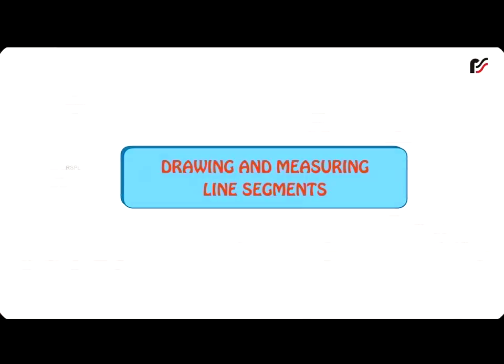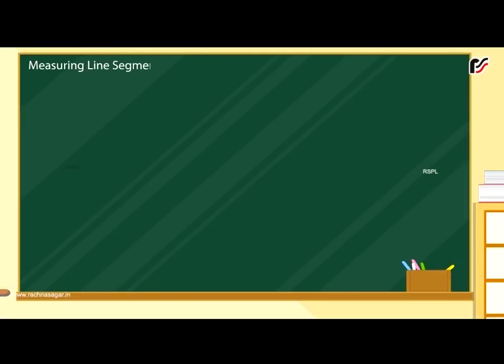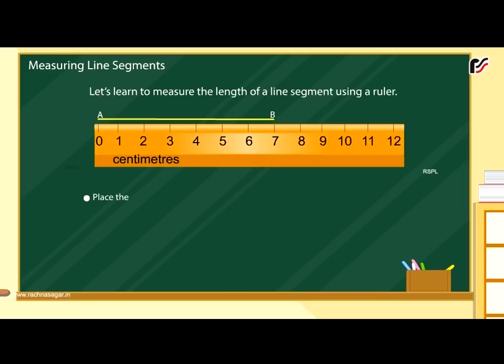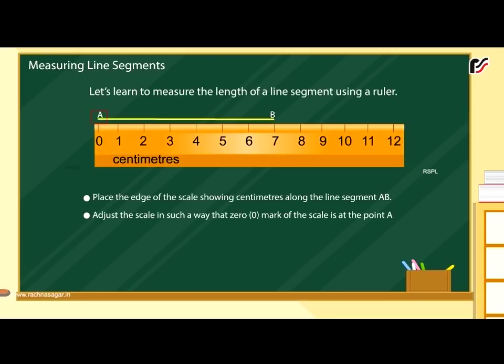Drawing and Measuring Line Segments: Let's learn to measure the length of a line segment using a ruler. Place the edge of the scale showing centimeters along the line segment AB. Adjust the scale in such a way that 0 mark of the scale is at point A. Read the scale at point B. Here, the mark of the scale is 7 centimeters. So, the length of the line segment AB is 7 centimeters.